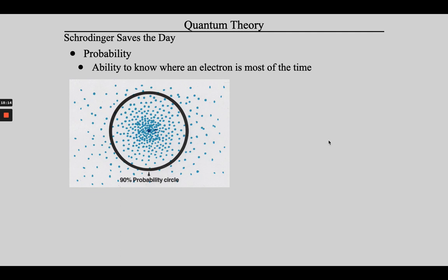People came to Schrödinger and said, 'If it's not orbits around the sun, how do we understand electrons?' And Schrödinger answered like this. So what does an atom look like? What's the heavy blue dot in the middle? The nucleus. What do the dots represent? They represent one electron moving around the nucleus. These dots represent where this electron will be — it's like a time-lapse photo.